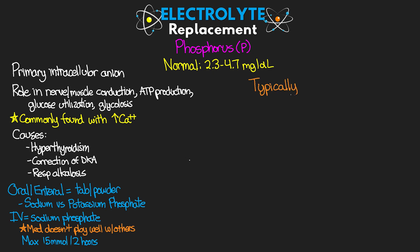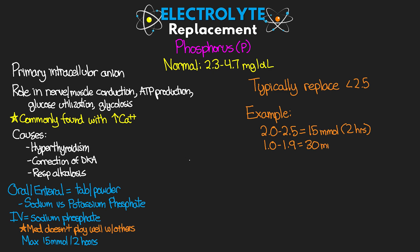When replacing phosphorus IV, we use sodium phosphate. Important to know that this medication does not play well with others — especially calcium, with which it quickly and significantly crystallizes. Our max infusion dose is 15 millimoles over 2 hours, so giving this one takes a while. We typically start replacing when levels are less than 2.5. An example protocol: level 2.0 to 2.5 — give 15 millimoles over 2 hours; 1.0 to 1.9 — give 30 millimoles over 4 hours; less than 1.0 — give 45 millimoles over at least 6 hours (critical, notify provider). Recheck serum phosphorus level 6 hours after infusion.